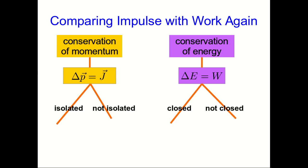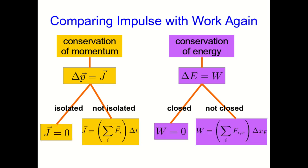And now it splits into cases. Either we are in an isolated or not isolated system, or a closed or not closed system. And in the isolated or closed cases, the impulse or the work just end up being 0. And in the not isolated or not closed cases, we end up with equations for how to calculate impulse and work, which look extremely similar to each other. And so overall, you can see that these theories are very, very similar in their structure.